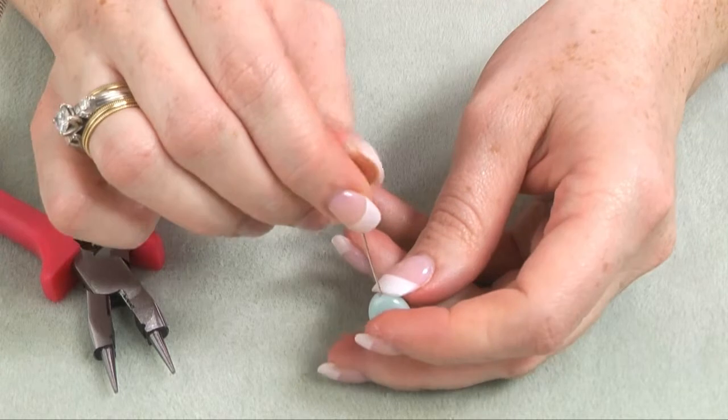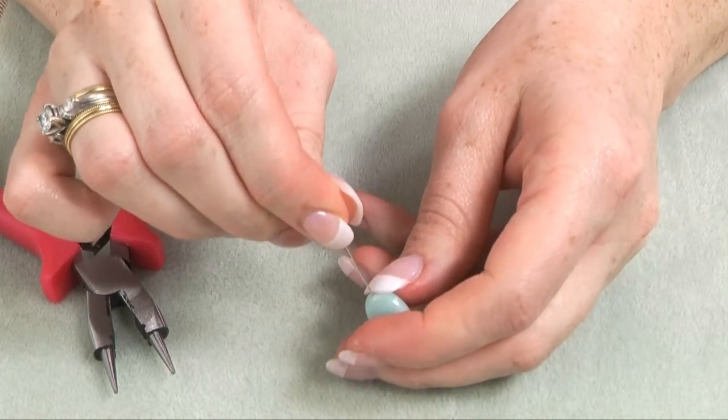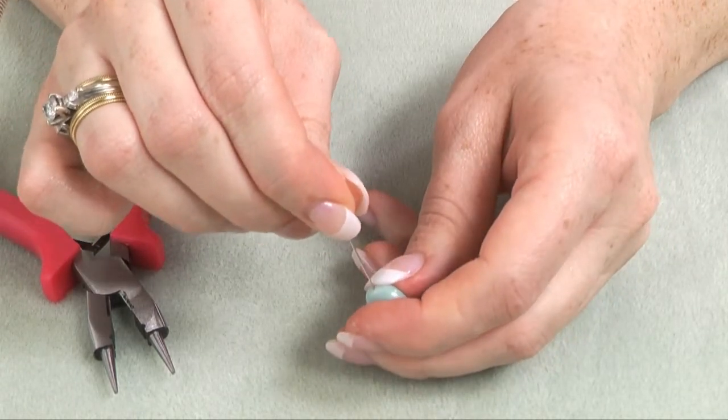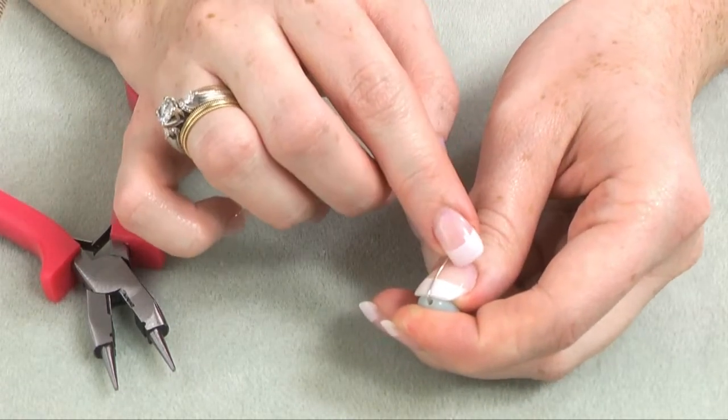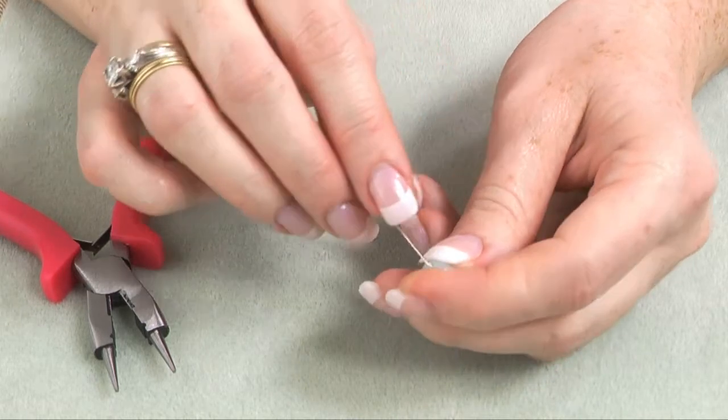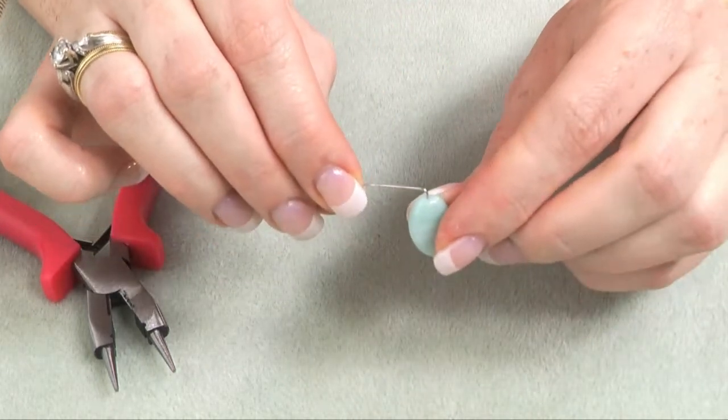Place your thumb on top of the bead, pushing against the pin. Bend the pin back over your thumb. This will create a right angle.